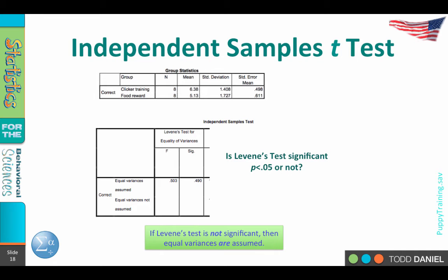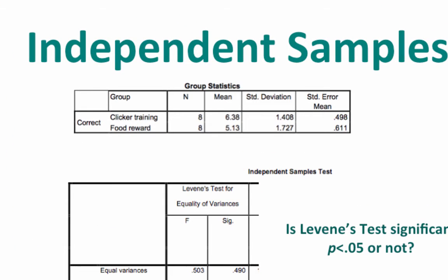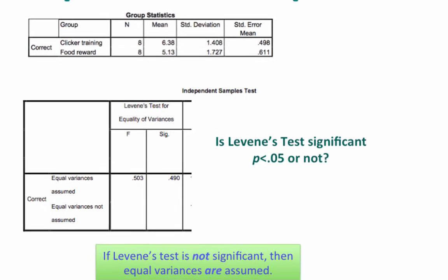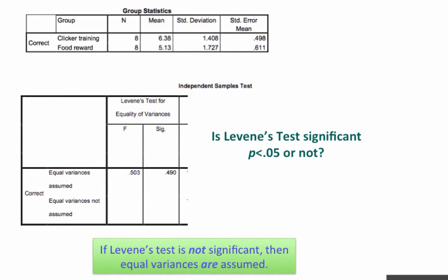As the output pops up, you'll notice at the top we see group statistics, which gives us our sample size of 8 for each group, the mean for each group 6.38 and 5.13, and the standard deviations of 1.4 and 1.7. Are those standard deviations approximately equal? Let's turn to the Levene's test to find out. I've covered up part of the output, so we'll focus solely on Levene's test for equality of variances. It's actually an F test. We'll learn more about F tests later, but what we're interested in is that significance value of 0.490.